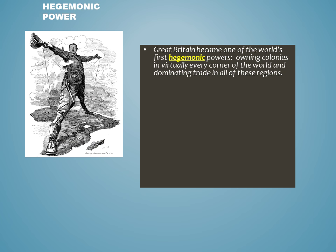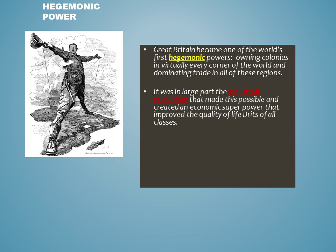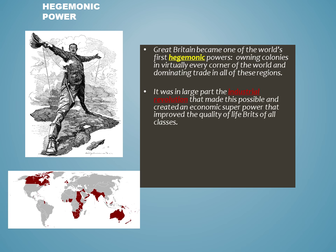From some of the earliest monarchies, Great Britain was able to become one of the world's first hegemonic powers, meaning that it owned colonies throughout the world and dominated global trade patterns. It was in large part due to the Industrial Revolution that Great Britain was able to become an economic superpower. Brits of all social classes were elevated by the advances in technology.